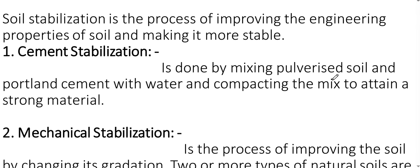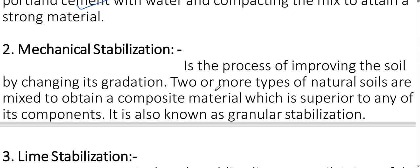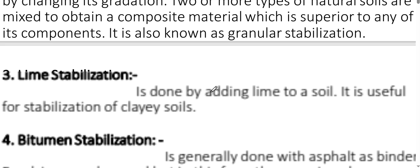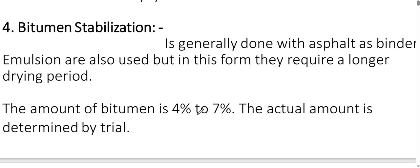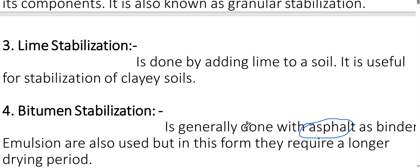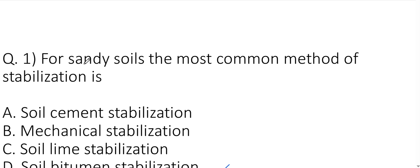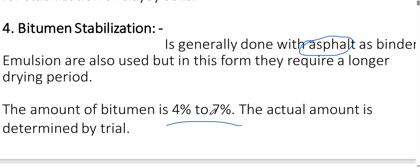Cement stabilization involves mixing soil with Portland cement. Mechanical stabilization means mixing soil materials to form a composite. Lime stabilization uses lime. Bitumen stabilization generally uses bitumen as a binder material — called asphalt — typically four to seven percent, and is commonly used for sandy soil. So option D is correct.